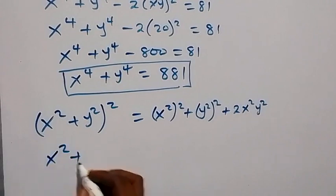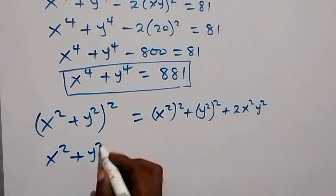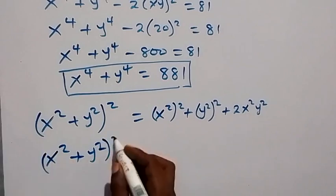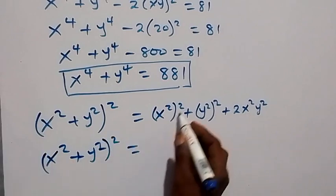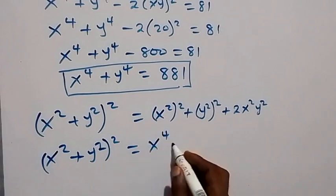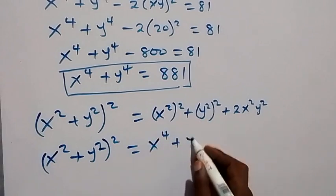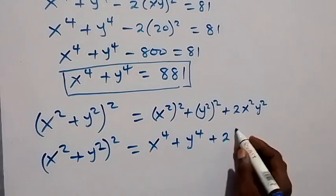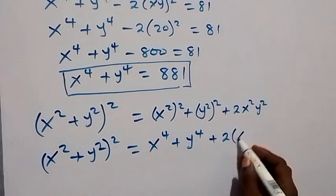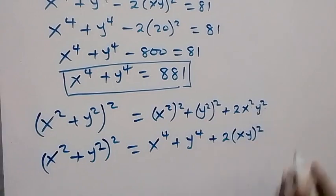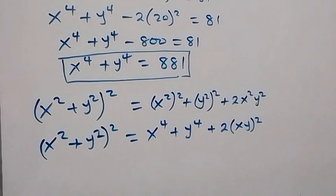So x squared plus y squared, all squared, equals x raised to power 4 plus y raised to power 4 plus 2 times bracket xy raised to power 2. We can take this power of 2 out, and now make substitutions.